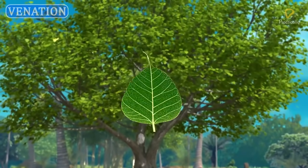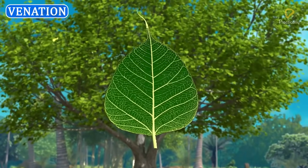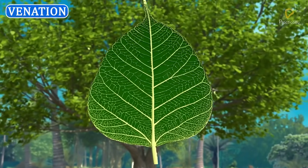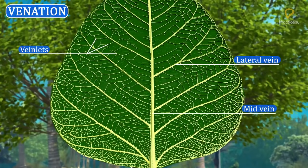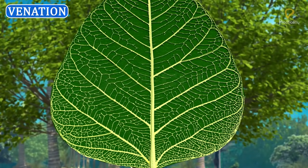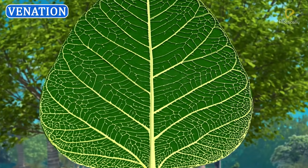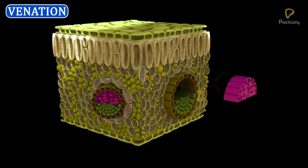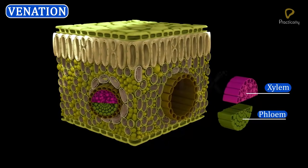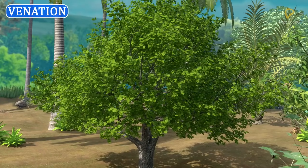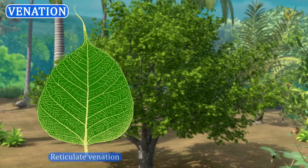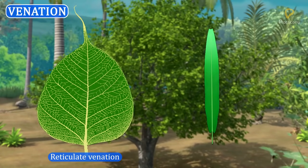To study about venation. The arrangement of veins and veinlets in the lamina of a leaf is termed as venation. Veins are made up of vascular tissues like xylem and phloem. In angiosperms, venation is of two types: reticulate venation and parallel venation.